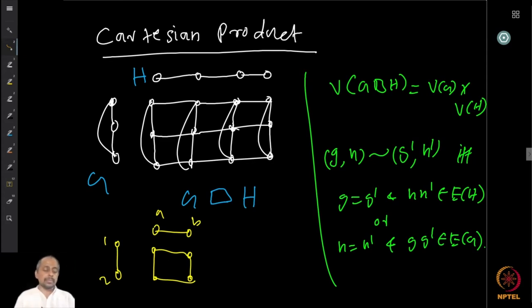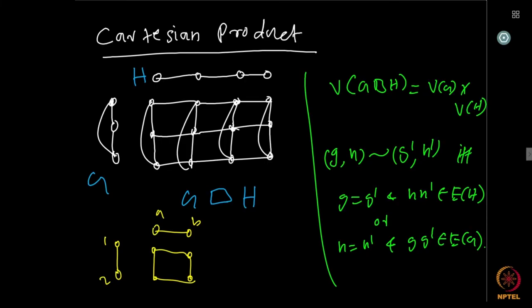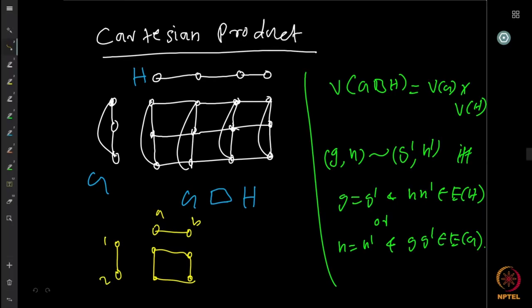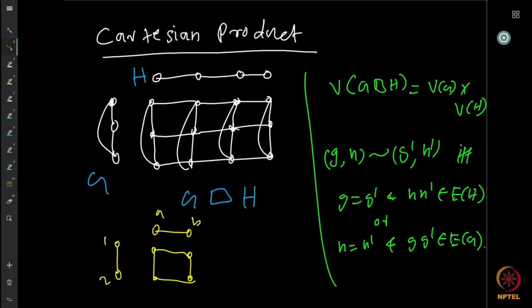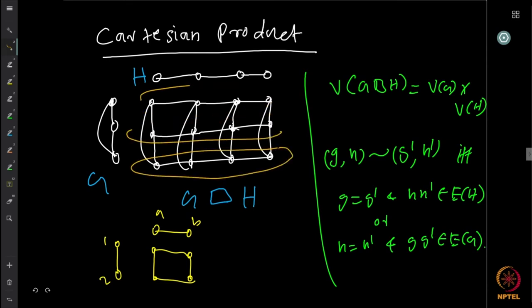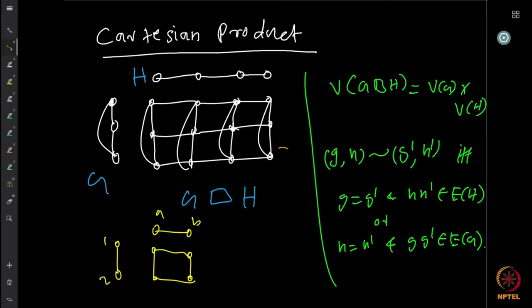Here is an example of a Cartesian product of a three-vertex cycle G and a four-vertex path H. If you look at the product, you can see several copies of G, and you can also see several copies of H if you look at it from the other direction.